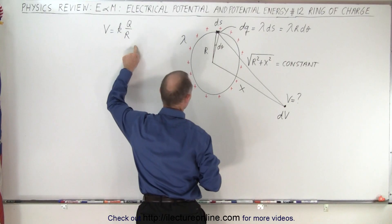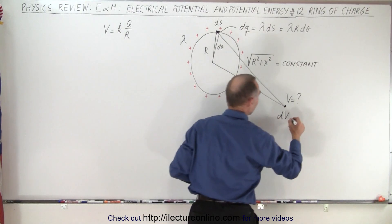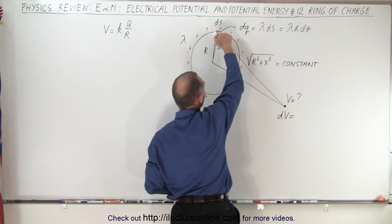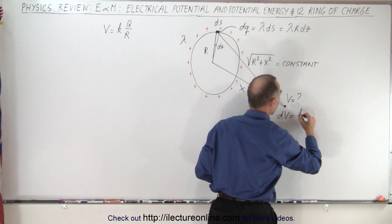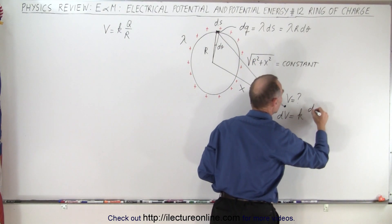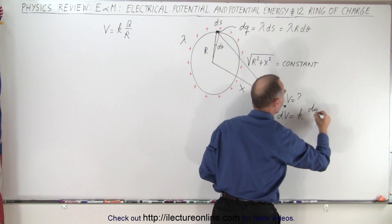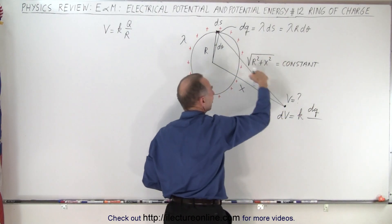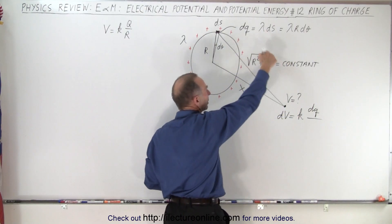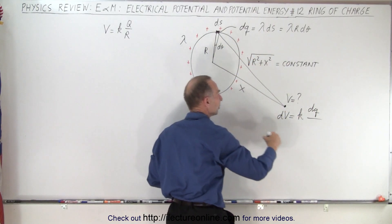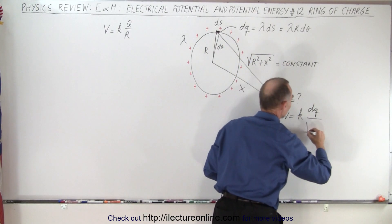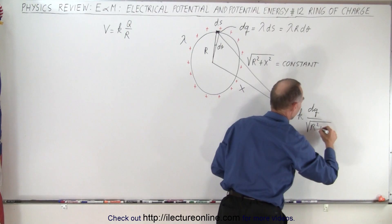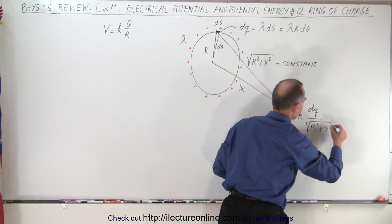In this case, the dv caused by the small little segment is going to be k times dq divided by the distance. That distance is defined by the Pythagorean Theorem, which gives us the square root of r squared plus x squared.